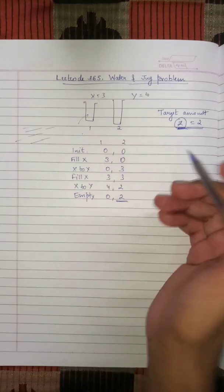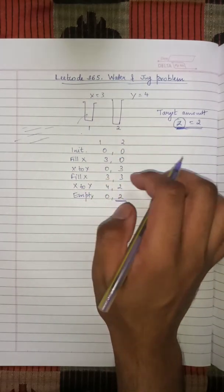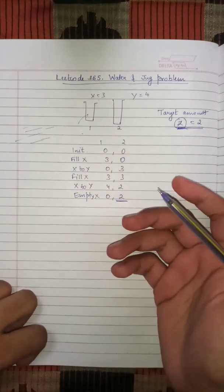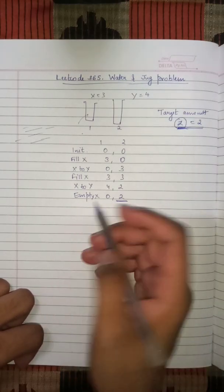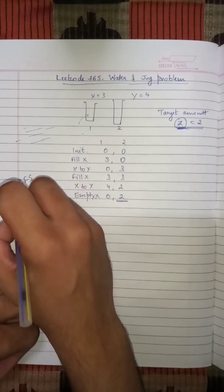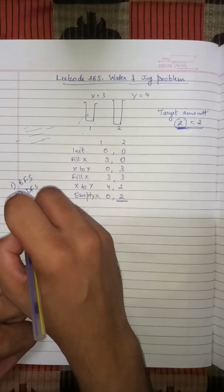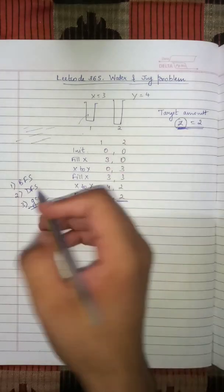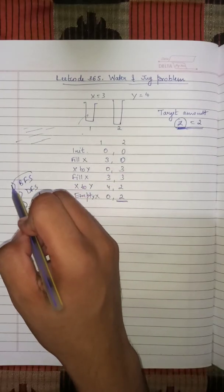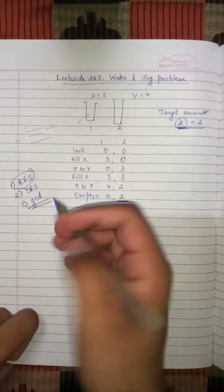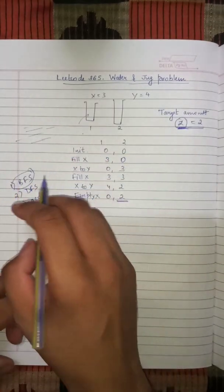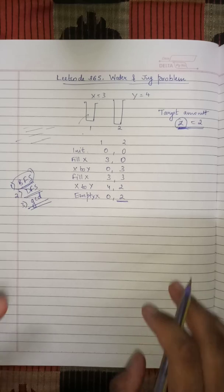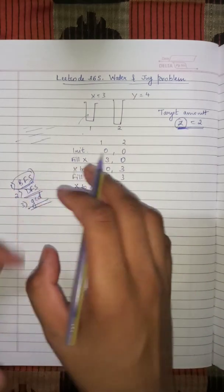We are able to measure our target amount of 2 liters. This is not a very straightforward question. There are actually two or three methods of solving this — we can solve it using BFS, DFS, or GCD. GCD is the fastest method but we're not going to discuss it today. We'll discuss the BFS solution.